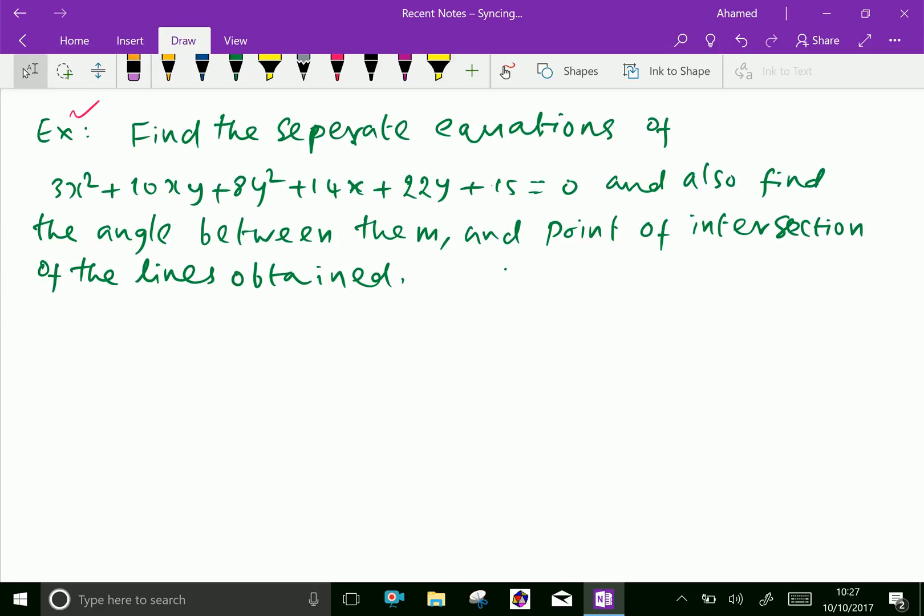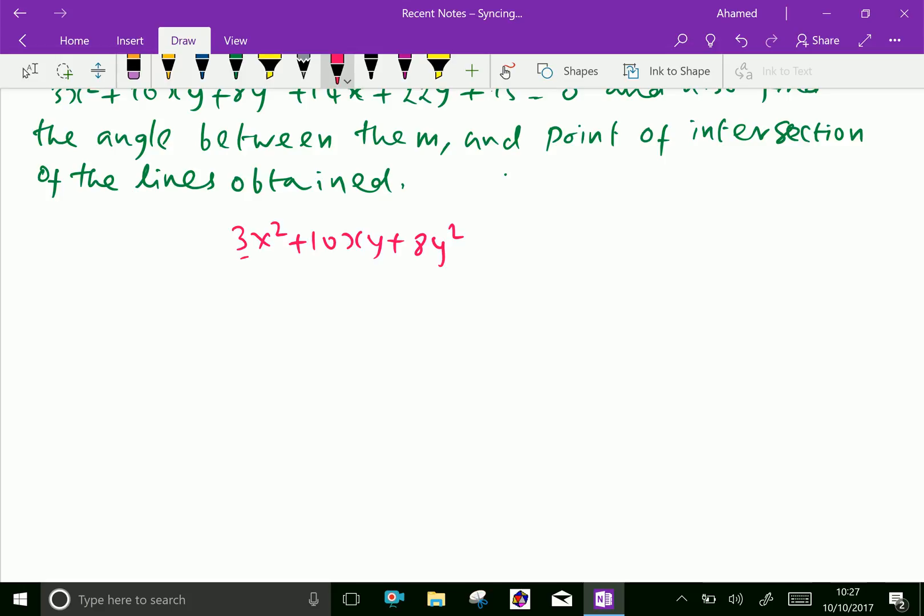First, write the homogeneous part of the equation, that is 3x squared plus 10xy plus 8y squared. Then we can split. Suppose 3 into 8 is 24, 4 and 6 is 24, then split this middle term as 3x squared plus 6xy plus 4xy plus 8y squared, means 10xy is split as 6xy plus 4xy.